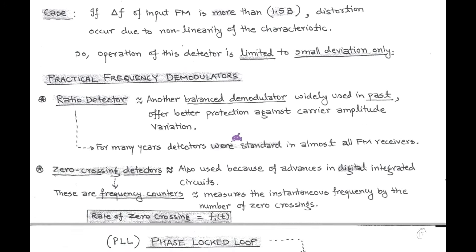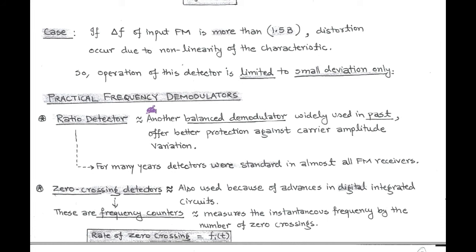Next we discuss some more frequency discriminators. Practically, there are many frequency discriminators. The first is the ratio detector, which is another type of balanced modulator but widely used in the past as it provides better protection against carrier amplitude variations. For many past years, ratio detectors were used in almost all FM receivers as a standard. The second is the zero crossing detector. These are based on digital integrated technology and are basically frequency counters that measure the instantaneous frequency by counting the number of zero crossings, or we can say that instantaneous frequency is measured by the rate of zero crossings.